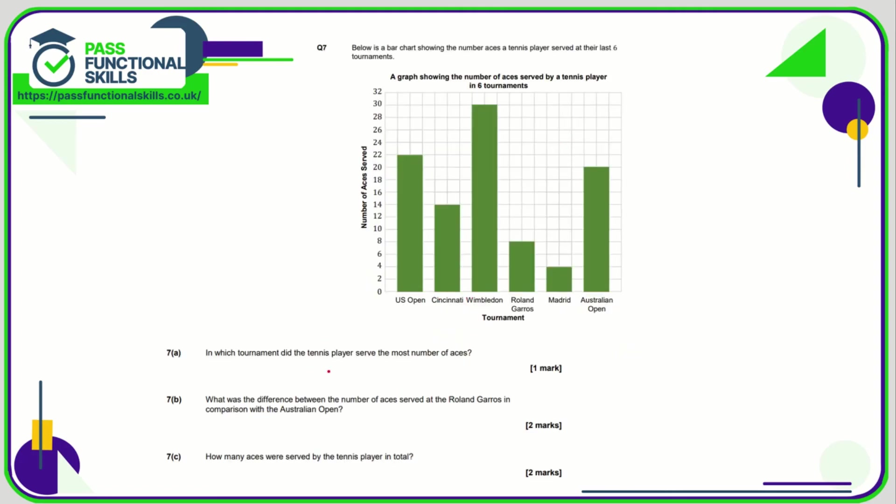Question number seven. In which tournament did the tennis player serve the most number of aces? Which is the highest bar? That's clearly Wimbledon. What was the difference between Roland Garros and the Australian Open? Roland Garros is eight, Australian Open is twenty, so twenty minus eight is a difference of twelve aces. In total there are twenty-two from US Open, fourteen from Cincinnati, Wimbledon is thirty, eight for Roland Garros, four for Madrid, and twenty for Australian Open. Add them all together for a total of ninety-eight aces.